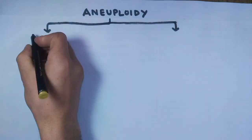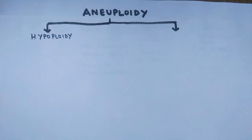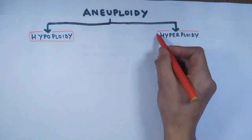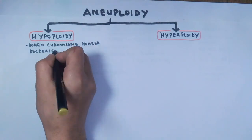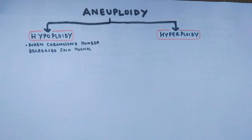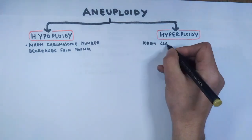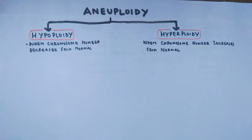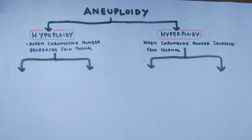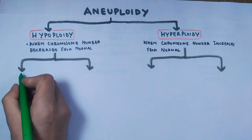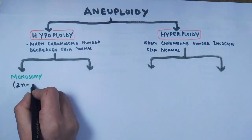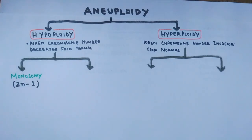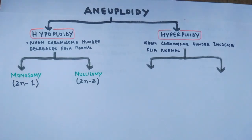There are two types of aneuploidy: hypoploidy and hyperploidy. Hypoploidy is when the chromosome number decreases from normal, while hyperploidy is when it increases. Hypoploidy is further classified into two types: monosomy, the 2n-1 condition, and nullisomy, the 2n-2 condition.